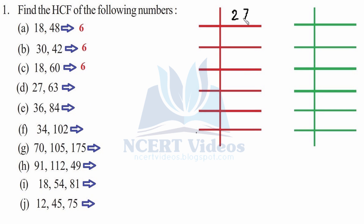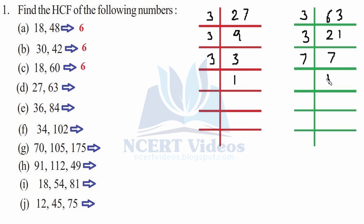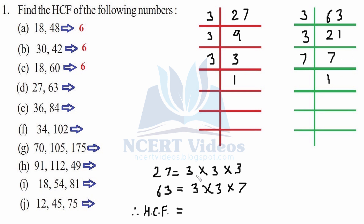Part d: 27 and 63. Three nines are 27, three threes are nine, three ones are three. For 63, we divide by three: three twenty-ones are 63, three sevens are 21, seven ones are seven. We have two common factors: three and three. So the HCF would be 3×3 = 9. That was for part d.